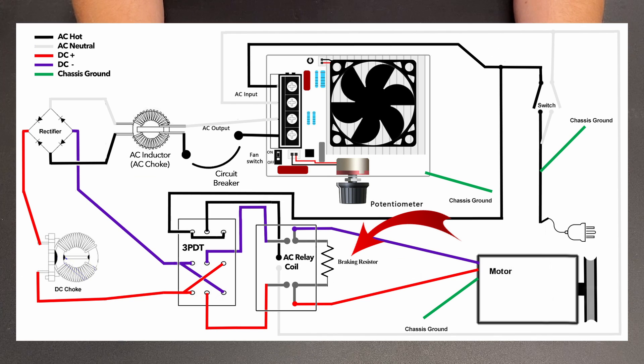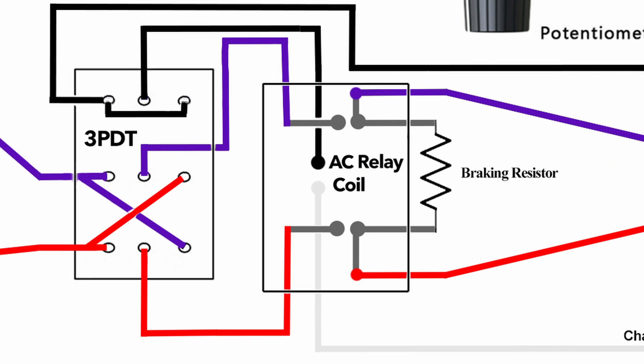Now notice that with the double pole double throw relay, in the normally closed position, you have the motor and the braking resistor hooked up together. That means when there is no power to the relay, the resistor and motor are connected, and the braking action is happening. But when the coil for the relay is energized, the resistor disconnects from the motor, and the power connects to the motor. And that's how we achieve power and direction, and then when power to the relay is cut, it applies the brake to the motor.